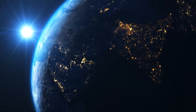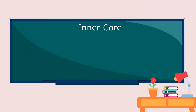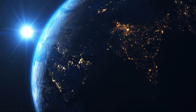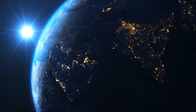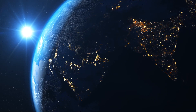Due to very high temperature, iron and nickel melt. The inner core is the innermost layer of the Earth. It is made up of solid nickel and iron. Its temperature reaches as high as 5,000 degrees Celsius. The inner core is not liquid or molten. Because of the inner core's intense pressure, it is believed that iron and nickel solidify.